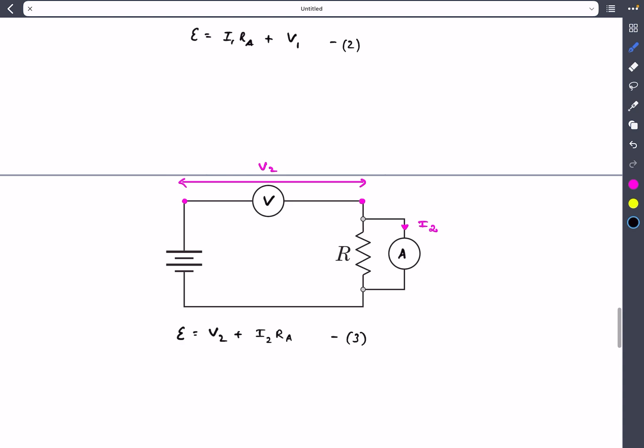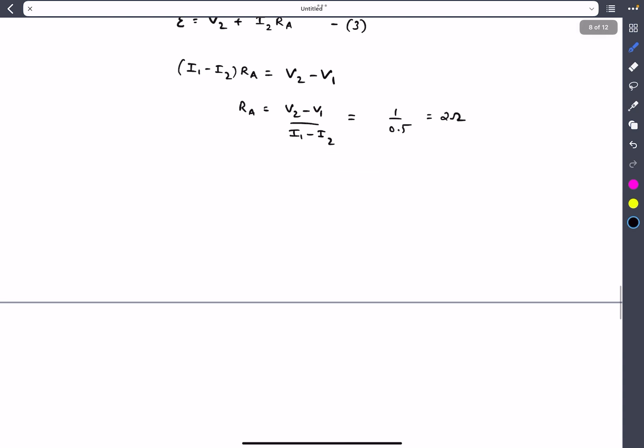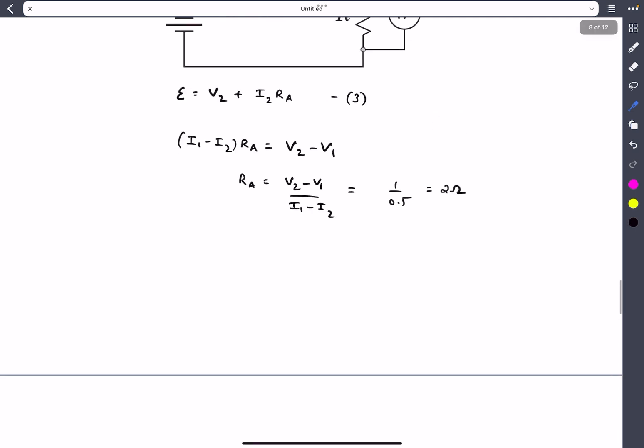If you observe equations two and three, we can directly figure out the value of Rₐ by just subtracting these two equations. Once you substitute the values of all the given quantities you will get the answer as 2Ω. So we have figured out the resistance of the ammeter.